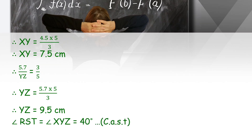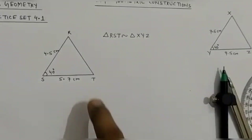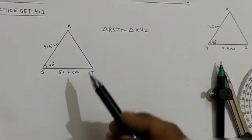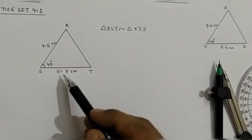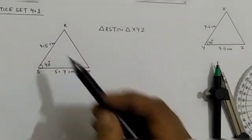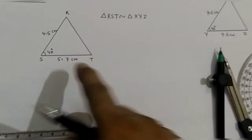Since the triangles are similar, angle RST is congruent to angle XYZ. Angle RST is given as 40 degrees, so angle XYZ is also 40 degrees. Now we have sufficient information for triangle XYZ. Looking at the rough figure for triangle RST: ST is 5.7 centimeters, angle S is 40 degrees, and SR is 4.5 centimeters.